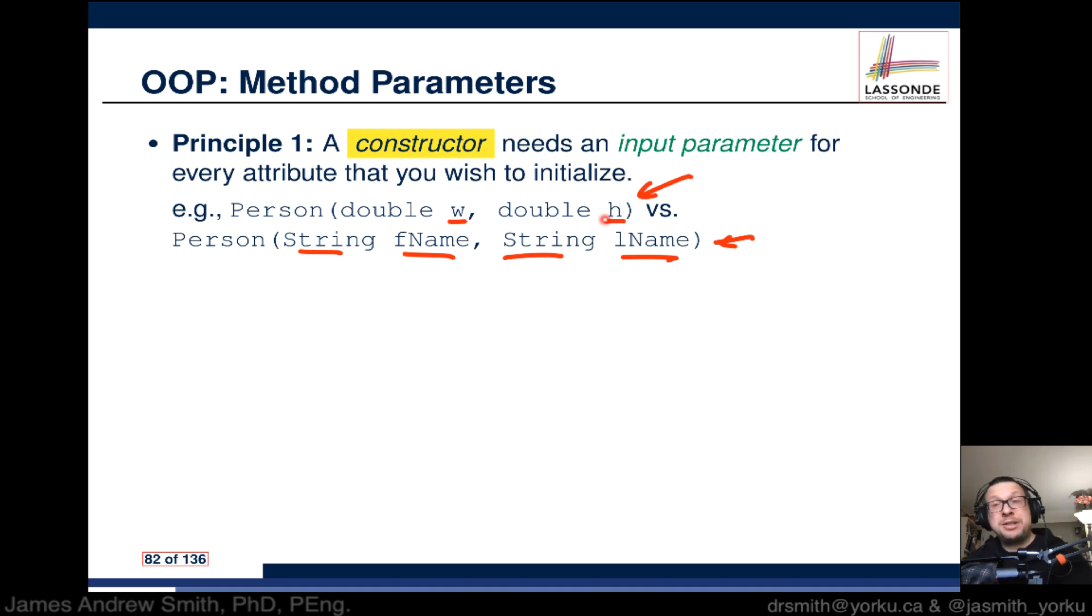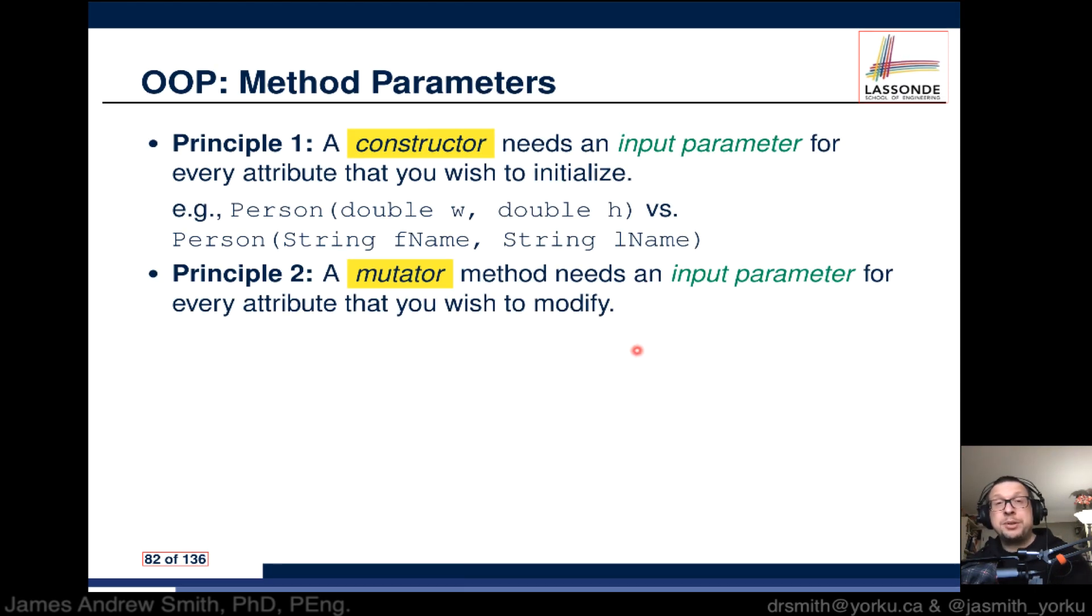You can have other methods down the road for making that happen. Principle number two - that was constructors, now we're looking at mutators. A mutator method needs an input parameter for each attribute that you wish to modify or mutate or change. Here's a pair of examples. In Point, if we did void moveToXAxis, that could work because the changes would be internal. Void moveUpBy where we want to specify a value from the outside in terms of how much it's going to move - that would work as well.